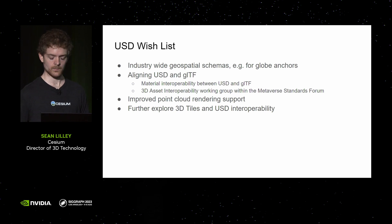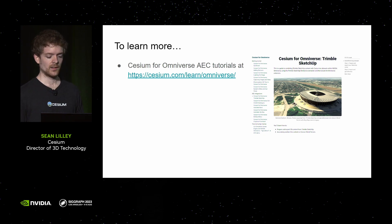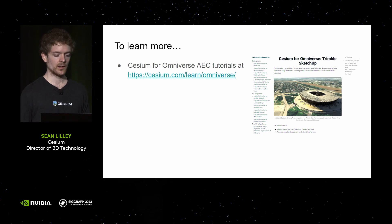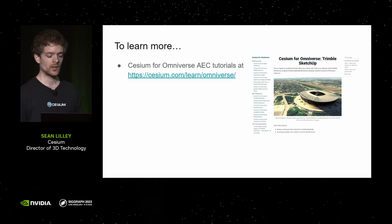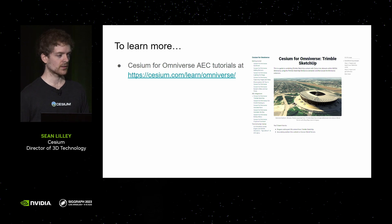To learn more, the best place to see how to use the tools we've talked about and bring them into Cesium for Omniverse is our learning page. It has a bunch of different tutorials showing how, given your CAD software, you export design models, get them into USD, add them to a stage, and then add other layers like global imagery, terrain, and 3D buildings. I think that's it — I have about five minutes for questions. Thanks.